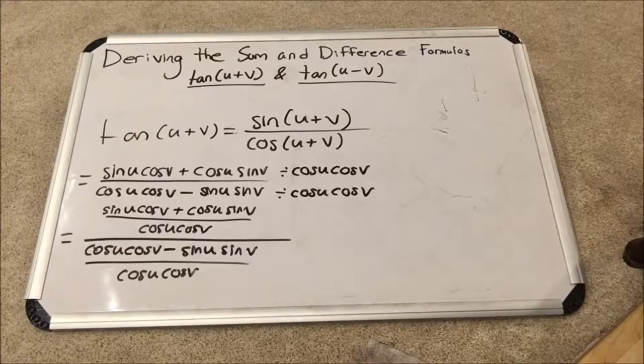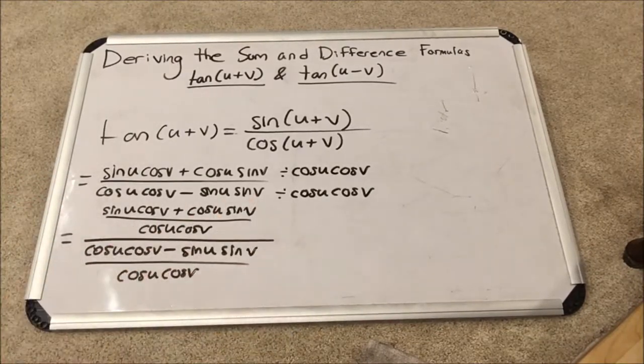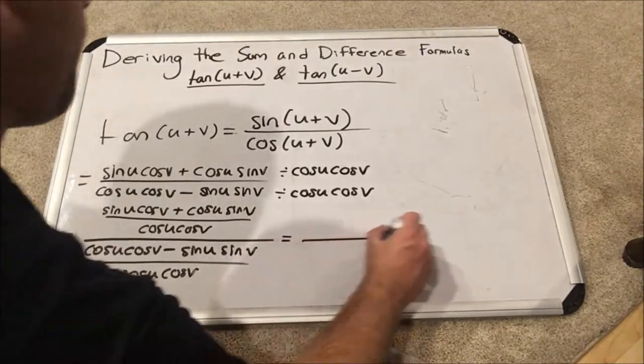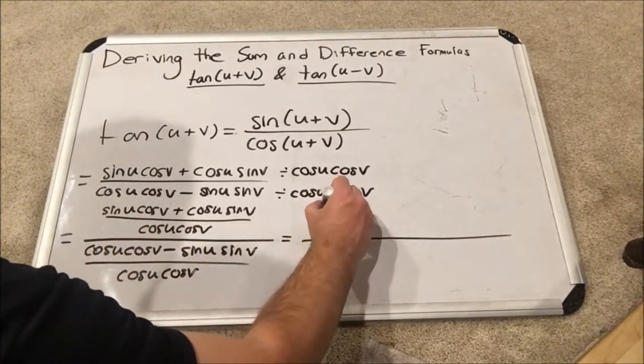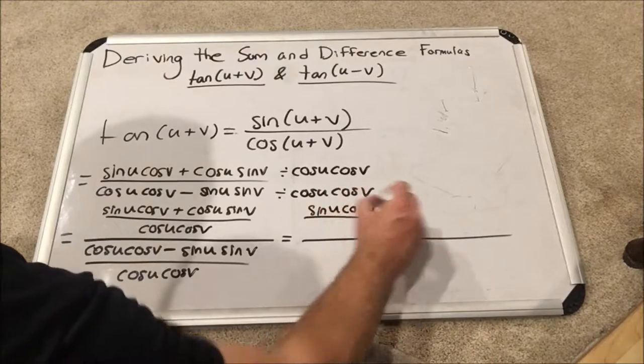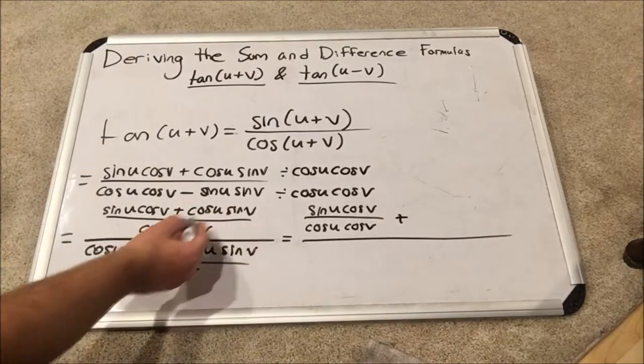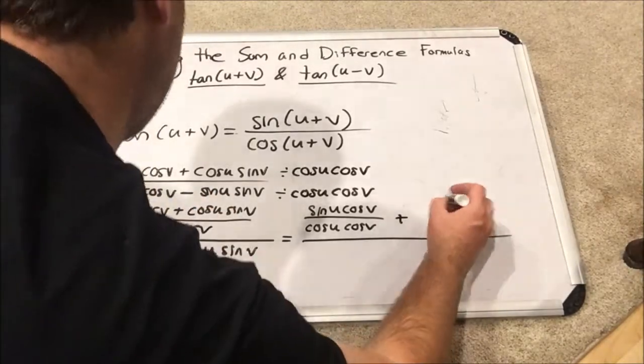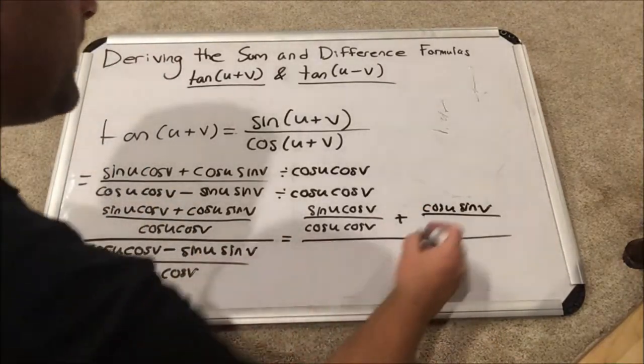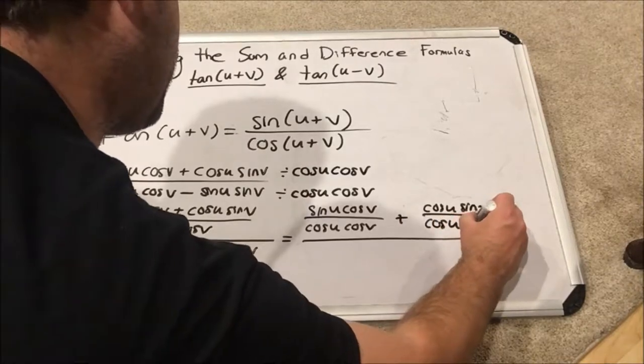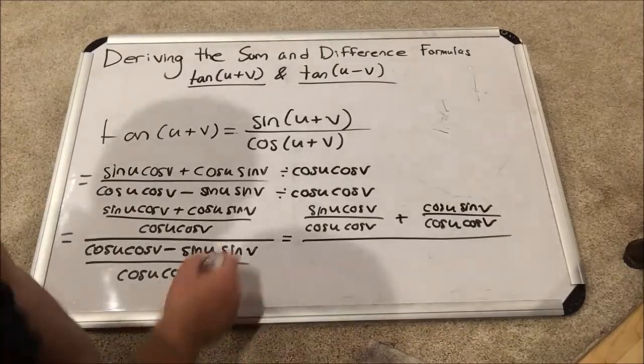Both the top and the bottom can be written as two separate fractions. You're going to see stuff start to cancel when we do this. So I'm going to write this first fraction as sine u cosine v over cosine u cosine v. I'm going to add to that the other fraction: cosine u sine v over cosine u cosine v. You can see stuff that is going to cancel.